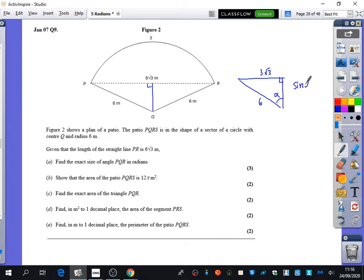So sine alpha is three root three over six, which is root three over two. So what's alpha? Don't do inverse sine, you should know this one: root three over two. 60 degrees, which is in radians pi over three.